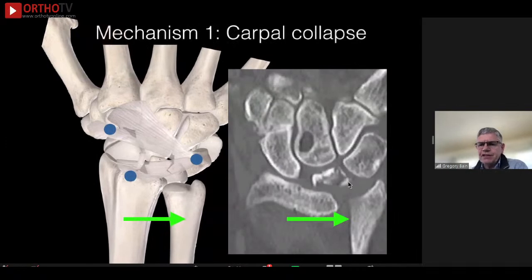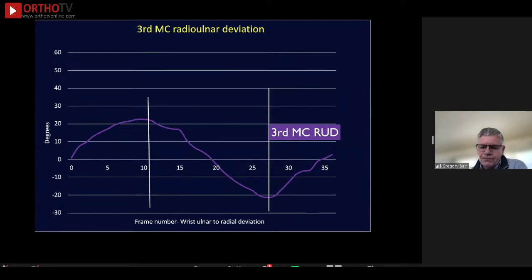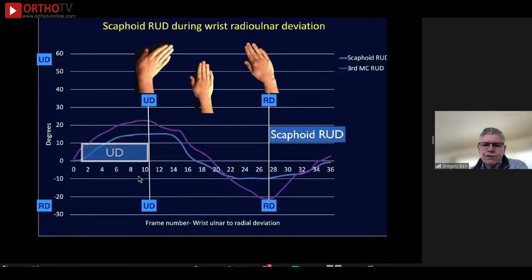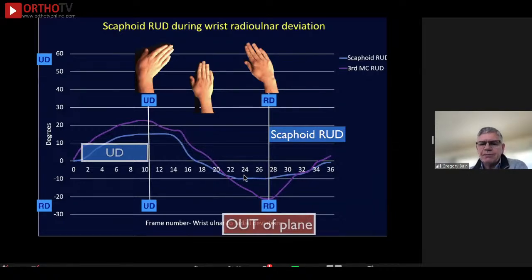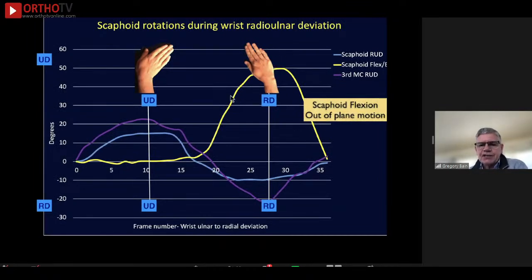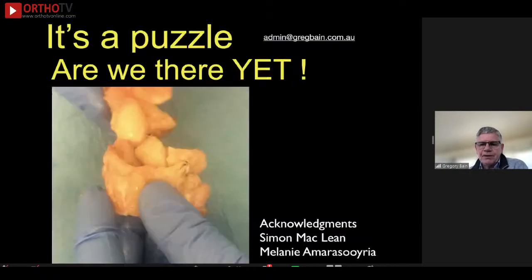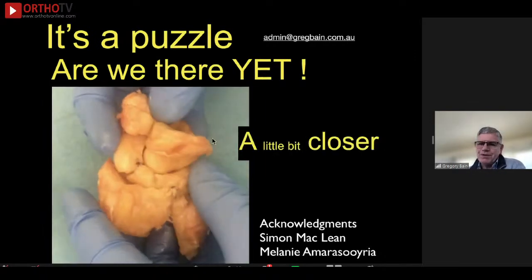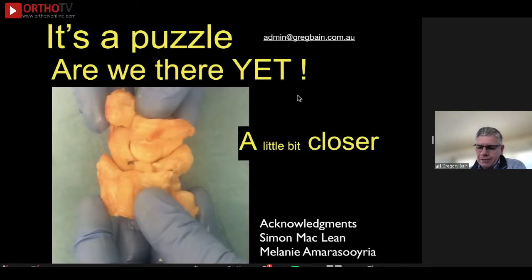With regard to Kienbock disease, we think of it as having intrinsic instability and also a type of extrinsic instability. This is where the central column collapses after fragmentation of the lunate, the radial column collapses, the dorsal intercarpal ligament becomes lax, and the whole thing collapses leading to ulnar translocation of the carpus. We've also been able to do some mapping of the motion of the third metacarpal in radial to ulnar deviation. The scaphoid follows the capitate and third metacarpal in ulnar deviation, but not in radial deviation, leading to out-of-plane motion of the scaphoid. We feel some of these concepts may be of value in the future, but we haven't fully sorted the puzzle out yet.